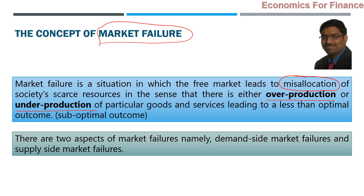To understand this, we should know what we can call a disease — when can we say there is a market failure? Simply speaking, the market has failed when misallocation of resources has occurred and, because of that, overproduction or underproduction of particular goods or services is happening. As a result, there is a sub-optimal outcome — less than optimal. There could have been a better outcome, but the market was not able to achieve it. When you achieve anything less than your potential, that is a failure, and that means the market has failed.